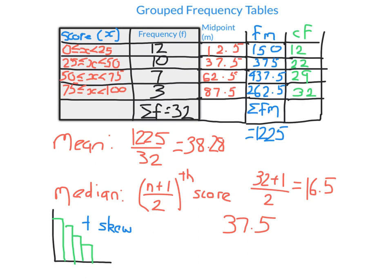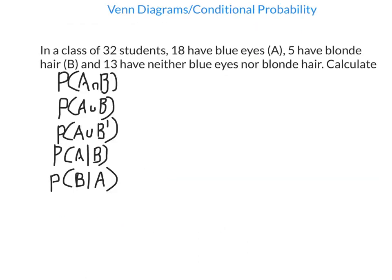Let's move on to probability. In probability, we assign a random event a number between 0 and 1 indicating how likely it is to occur. For example, a probability of 0.8 means an 80% chance of happening. We're going to look first at Venn diagrams, which are a useful tool for calculating probabilities. In this question, we have 32 students: 18 have blue eyes, 5 have blonde hair, and 13 have neither. We're going to calculate several probabilities.